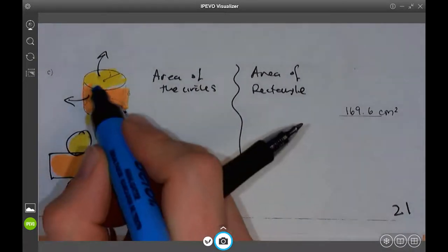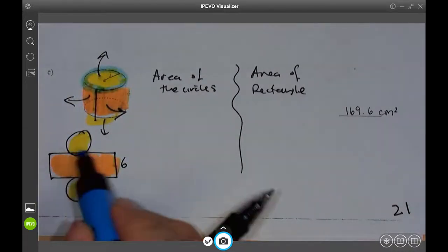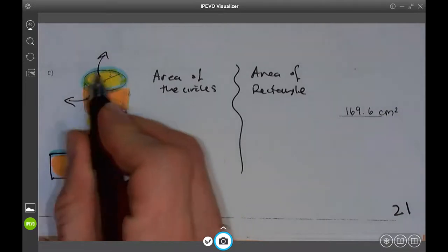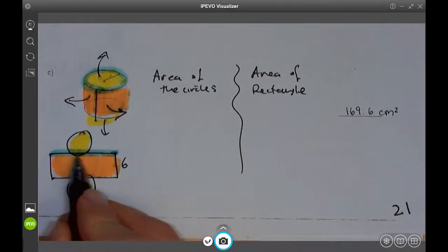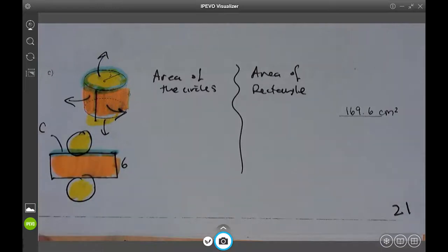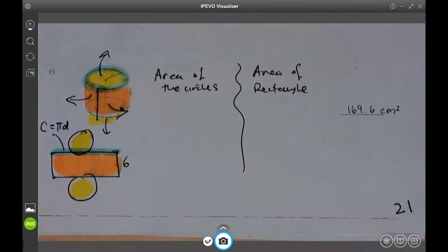And the length around the circle is the exact same length as that rectangle. So this is going to be the circumference of the circle is equal to this length. This is your circumference of your circle. We'll label it C. And circumference is pi D. That's the formula for circumference is pi D. Pi times diameter.